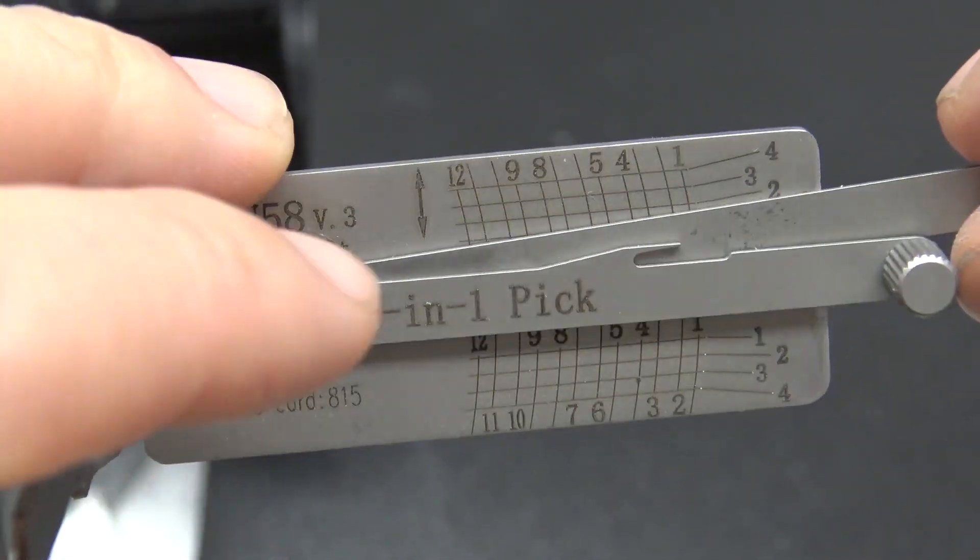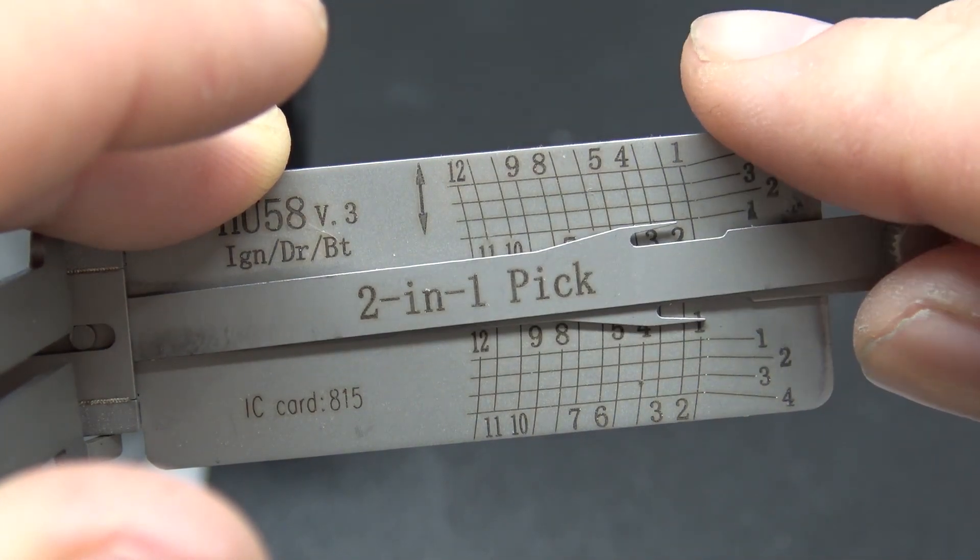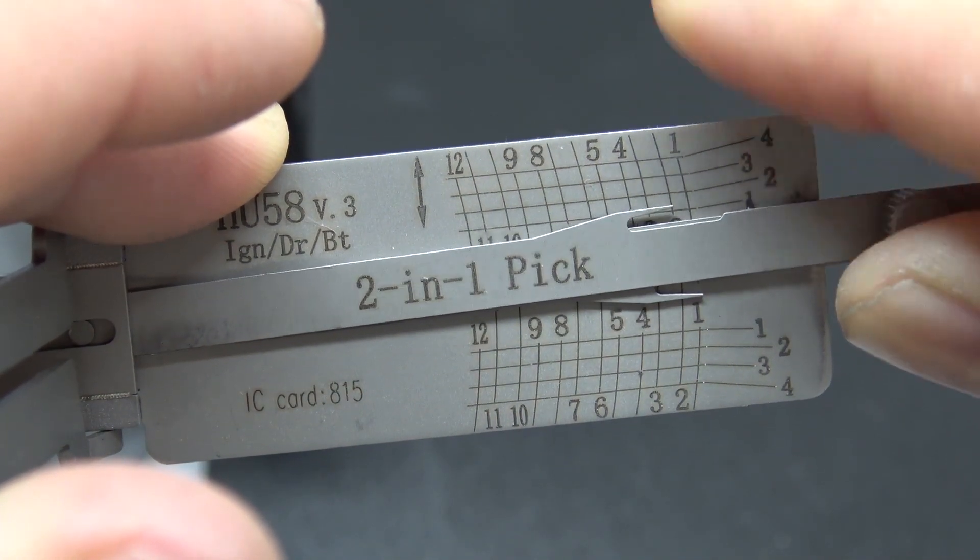All right, got tension on it here. I'm just going to start with number one - tiny click on one, and then two and three will be going up.